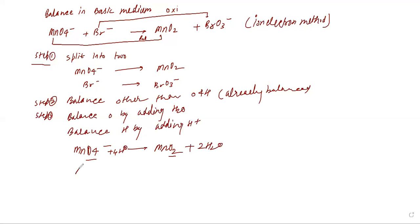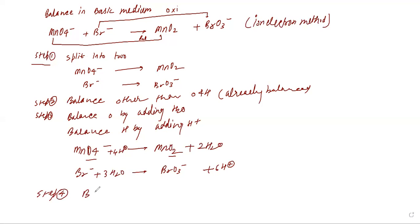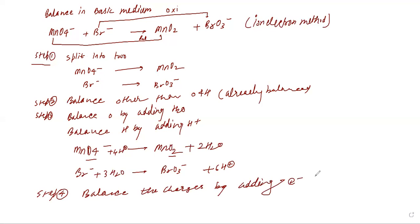For the second half-reaction: Br⁻ going to BrO₃⁻ — how many water molecules are required? Three H₂O, which means six H⁺. Step four: balance the charges by adding electrons on the side where positive charge is more.